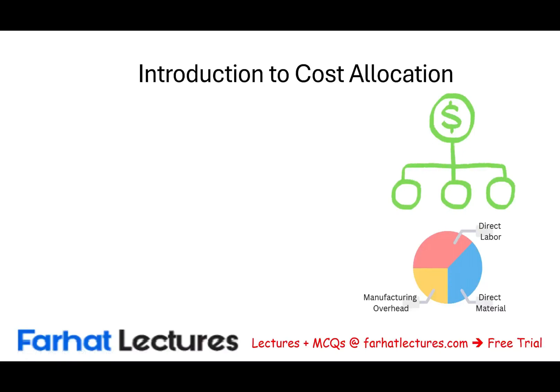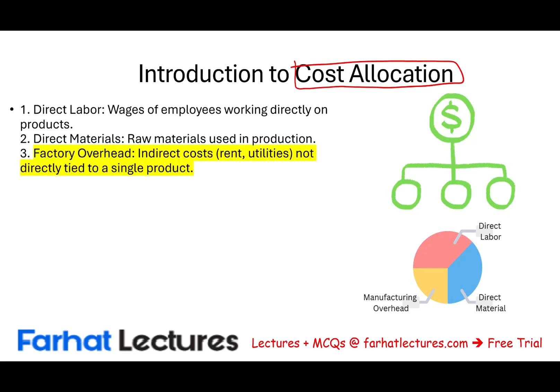Hello and welcome to the session in which we will discuss the concept of cost allocation. Let's go back and review what we learned. There are three elements to cost: direct material, direct labor, and factory overhead.